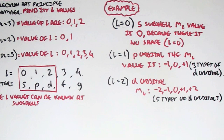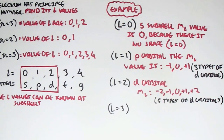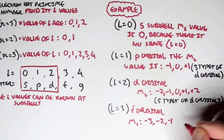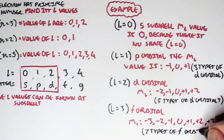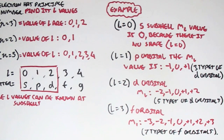For the azimuthal quantum number equal to 3, which is the F orbital, the magnetic quantum number will be negative 3, negative 2, negative 1, 0, positive 1, positive 2, and positive 3 — giving seven types of F orbitals. You can see how this keeps increasing. We don't go further than F or G usually, and we'll mainly look at the S, P, and D orbitals.